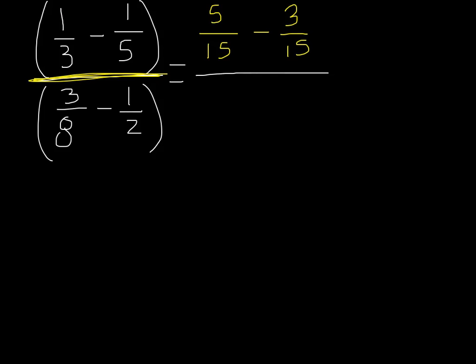Before I combine, I am now going to change for my bottom part of my large fraction. I am going to have the same denominator of 8. So I can keep my 3/8 and subtract. I go from 2 to 8 to get me 4/8. I am now going to reduce my numerator and my denominator by subtracting 5/15 minus 3/15. So I know that 5 minus 3 gives me 2, and I am left with 15 as well.